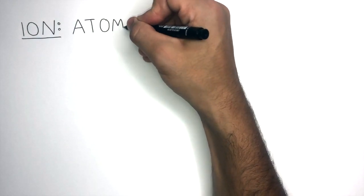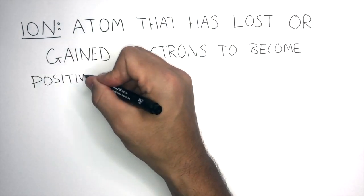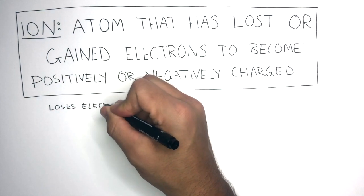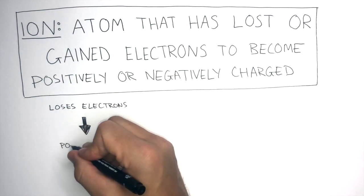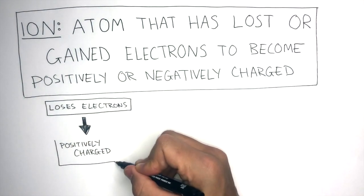An ion is an atom that has lost or gained electrons to become positively or negatively charged. If an atom loses electrons, it becomes positively charged.